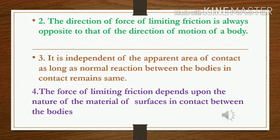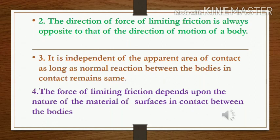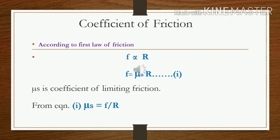The fourth law tells us what factors limiting friction actually depends on. The force of limiting friction depends upon the nature of the materials of the surfaces in contact. If one surface is perfectly smooth and another is rough, we observe that a smooth surface produces lesser friction while a rough surface produces greater friction. So greater is the smoothness, lesser is the friction, and greater is the roughness, greater is the friction.